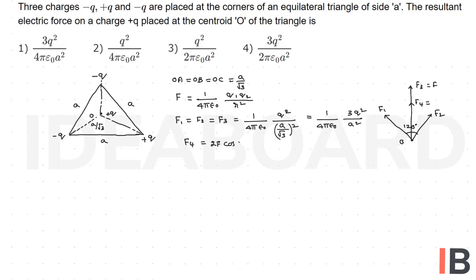F4 is equal to 2F cos theta by 2, 2F cos 120 by 2, 2F cos 60, which is equal to 1 by 2, and F, so F4 is also F. Finally, F3, F4, they are in the same direction, taking the net force.